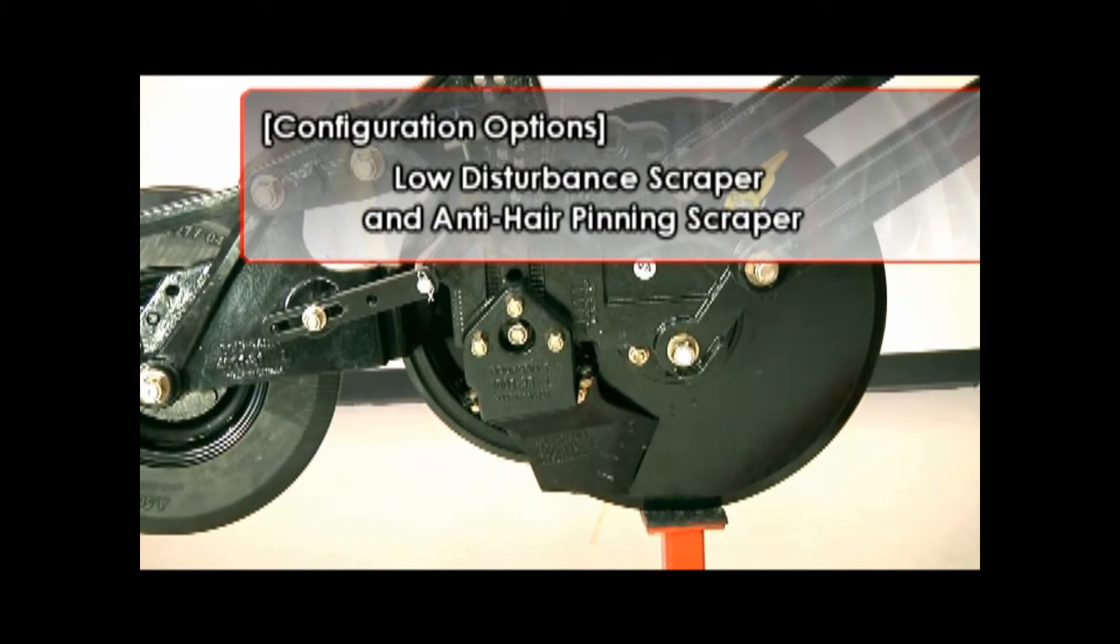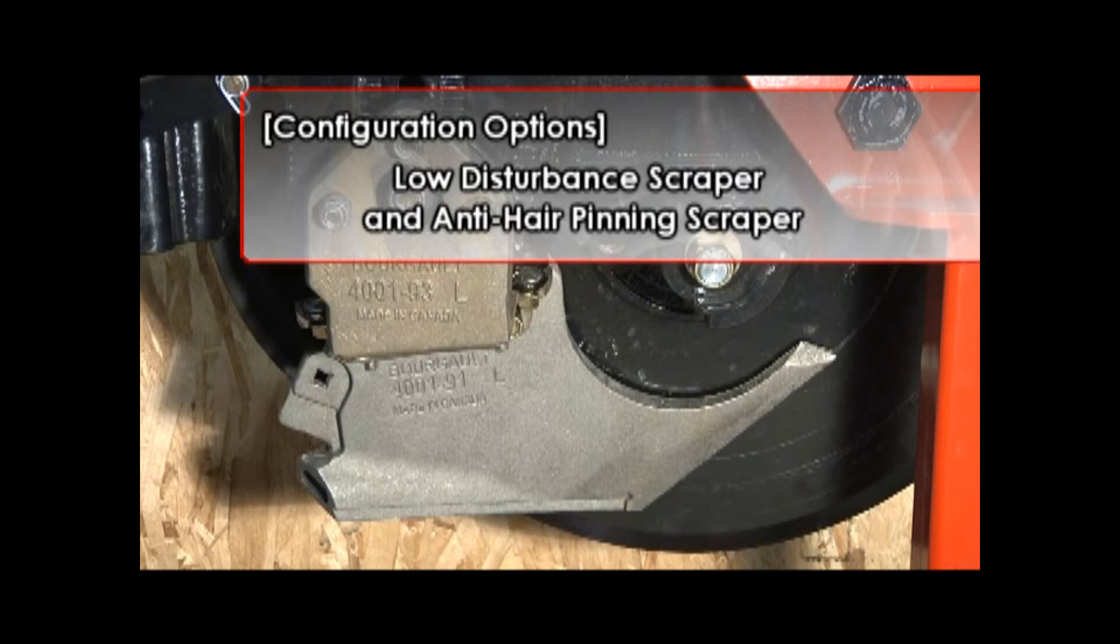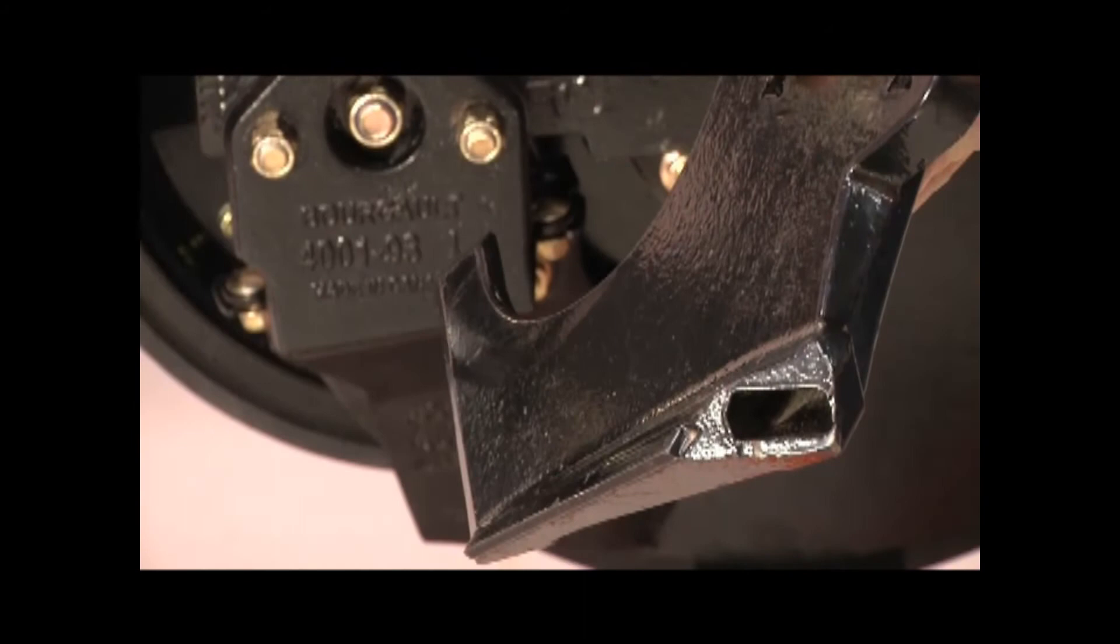There are two seed boot scrapers available for the 3710. Each one has a distinct mode of operation and is typically paired with a specific packer wheel option.